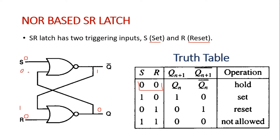We have inputs 0 and 0 at the first NOR gate, therefore the output will become 1 — there is no change in the output. Similarly, with inputs 1 and 0 at the second NOR gate, the output is again 0 — no change. So when the input is S=0, R=0, it gives us the Hold operation, meaning there is no change in the output.